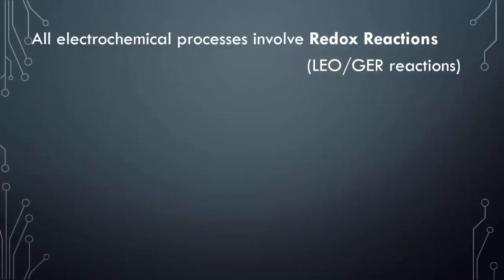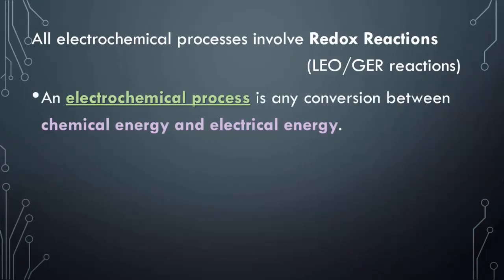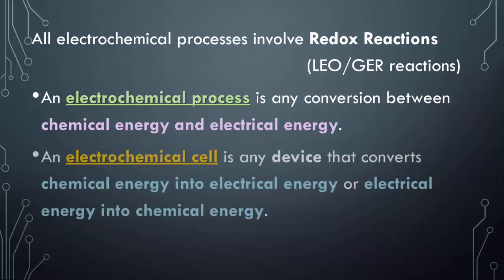So all electrochemical processes involve this redox reaction. The LEO and the GER have to happen in order for electrons to move. An electrochemical process is any conversion between chemical energy and electrical energy. An electrochemical cell is any device that can convert chemical energy into electrical energy, or electrical energy into chemical energy.